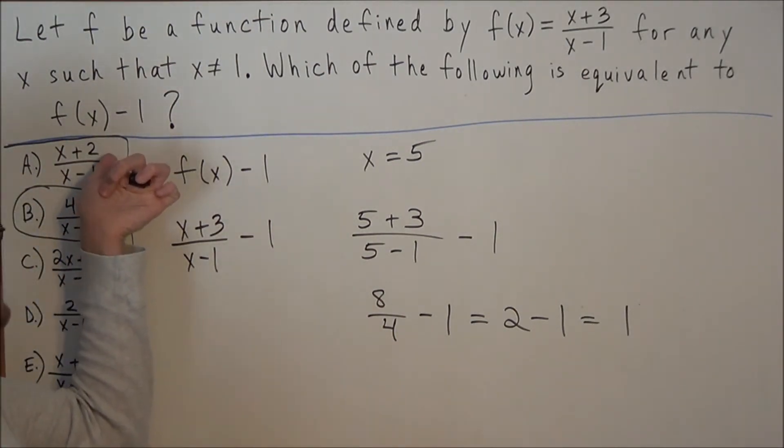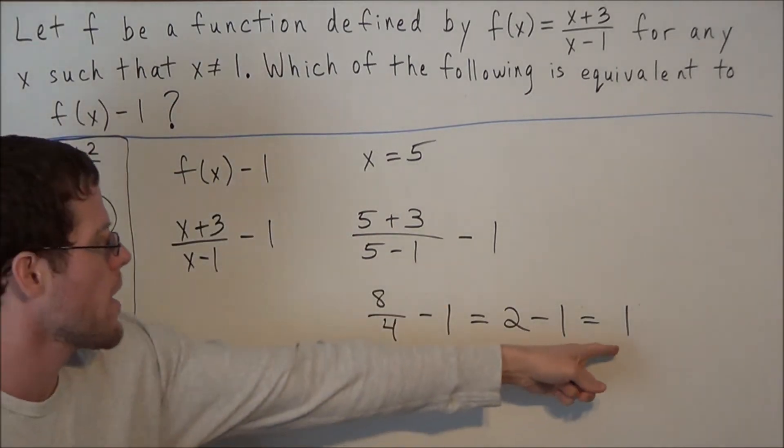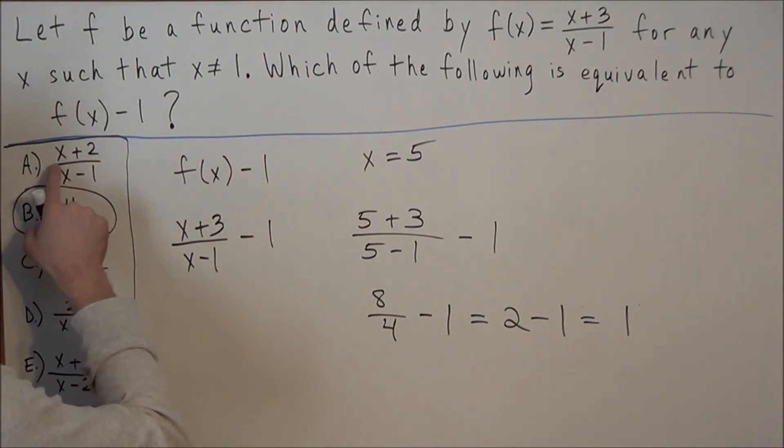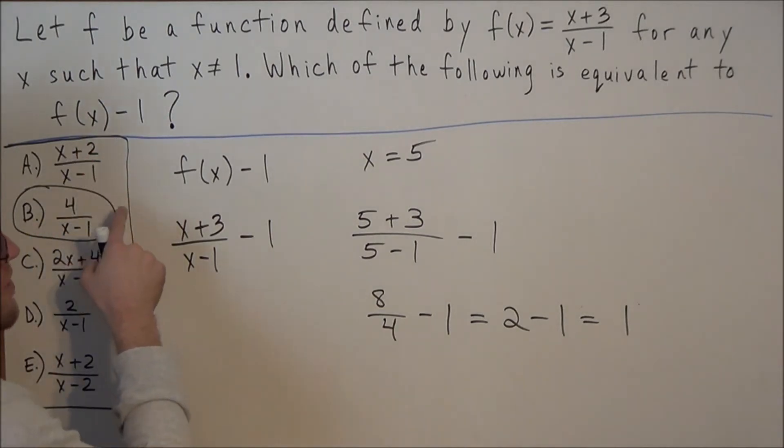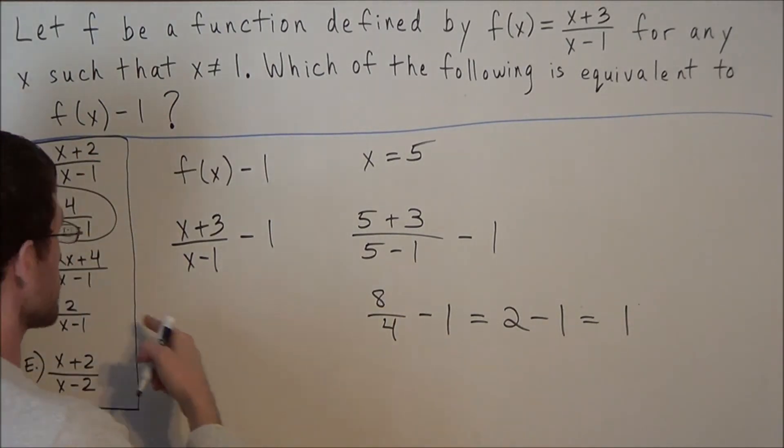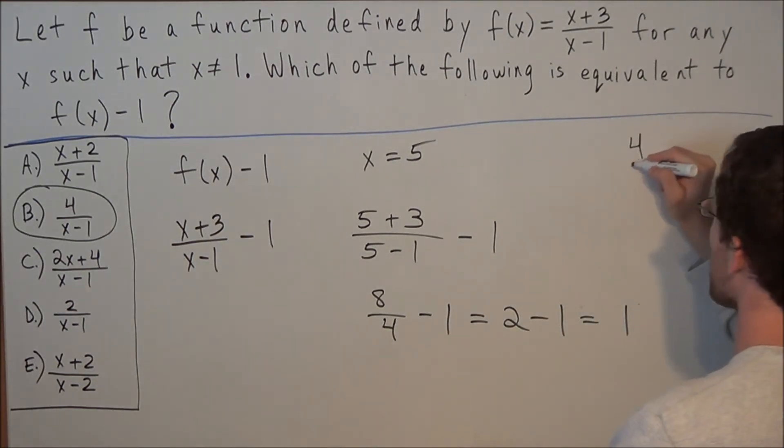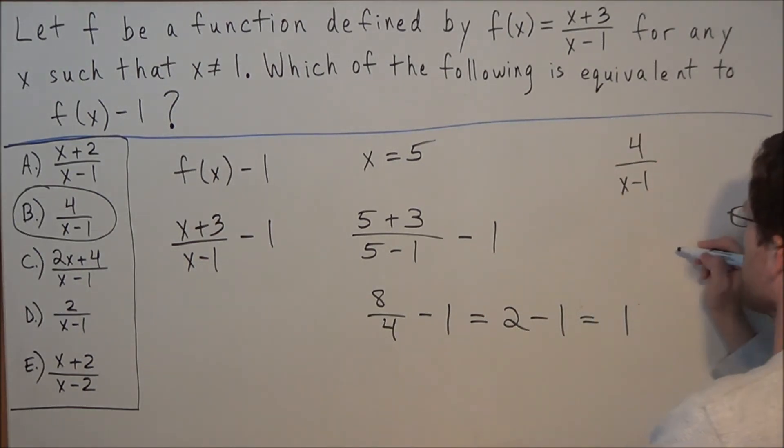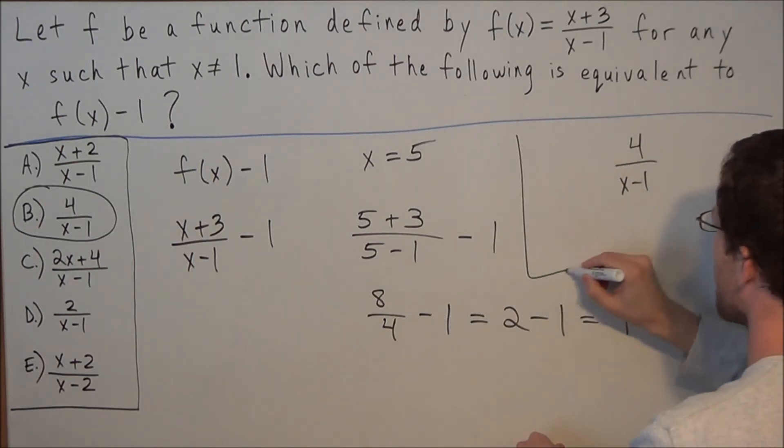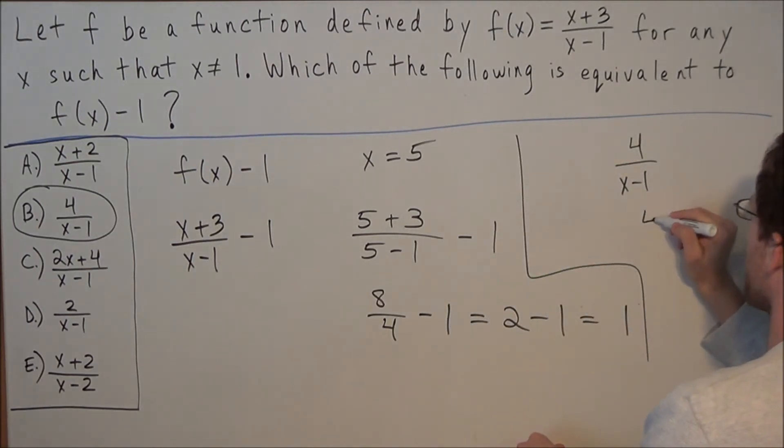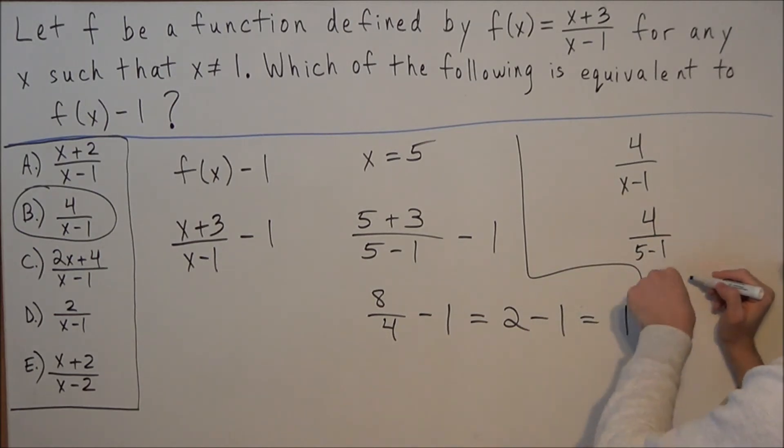Let's say we plug it into choice A, we would get something that doesn't match 1. We would have 5 plus 2 is 7 over 5 minus 1 is 4, and 7 divided by 4 is not 1. But if we plug it into choice B, notice we have 4 over x minus 1. So for the next line if we plugged in x equals 5, we would have 4 over 5 minus 1. And 5 minus 1 is 4. So we would have 4 divided by 4 which equals 1.